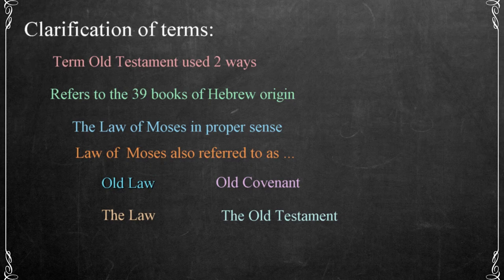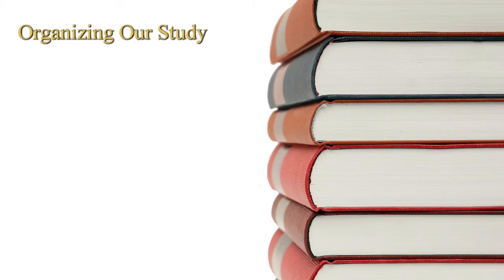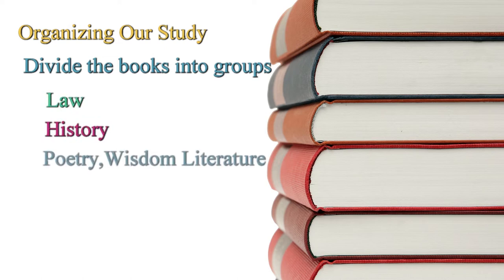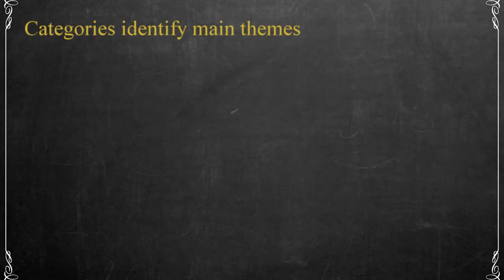In a later video, we'll talk about the time period governed by the Law, since this extends beyond the 39 books ending with Malachi. To help organize a study of the Old Testament, we can divide the books into groups. There are four main groups, and these are Law, History, Poetry or Wisdom Literature, and Prophecy.